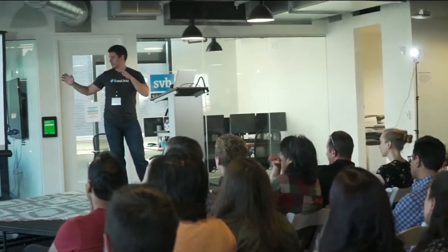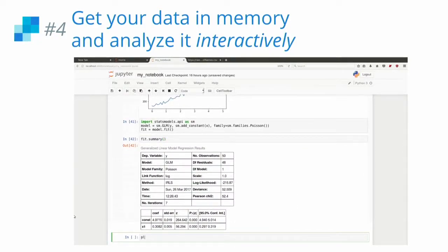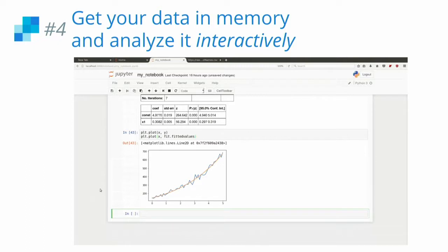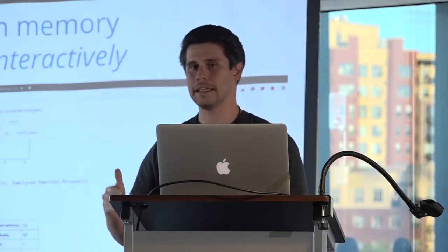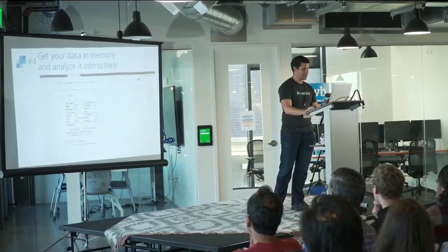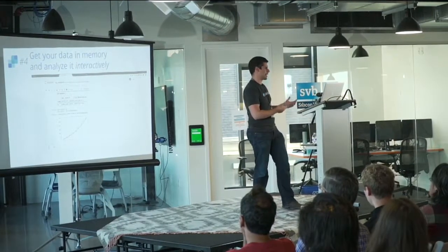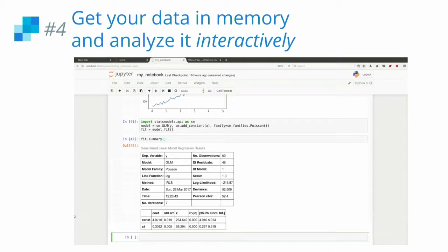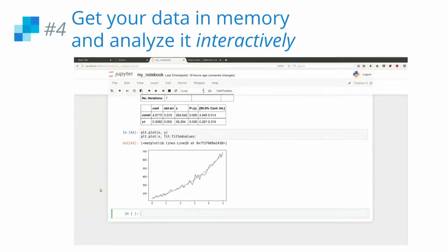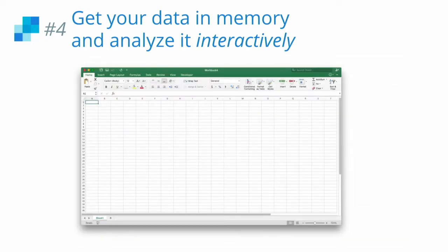Number four: get your data in memory. Interacting with data in an application like Jupyter Notebook with Pandas is about as close as you're going to get to that direct manipulation experience that an artist gets to have. I try to get there as fast as possible and spend as much time as I can working with my data interactively — because when you can think, write, and see the results immediately, you're more creative. It's so valuable to have this interactive experience that you should go out of your way to have it. It doesn't matter what application you use — Pandas, Jupyter, even Excel.